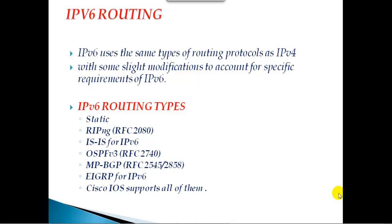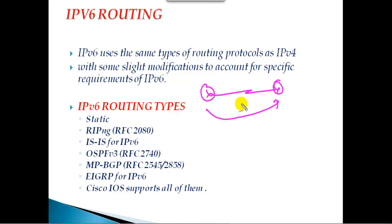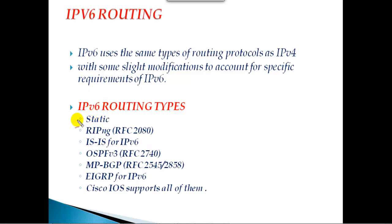IPv6 routing: we have already covered basic IPv6 address configurations in previous sections, and now we need to ensure that Router 1 is connecting to Router 2 so these two routers can communicate. To do that, we can implement some routing configurations. The concept of routing is exactly the same as in IPv4. In IPv6, we also have static routing, and the manual configuration syntax is similar to IPv4. We also have something called RIPng.